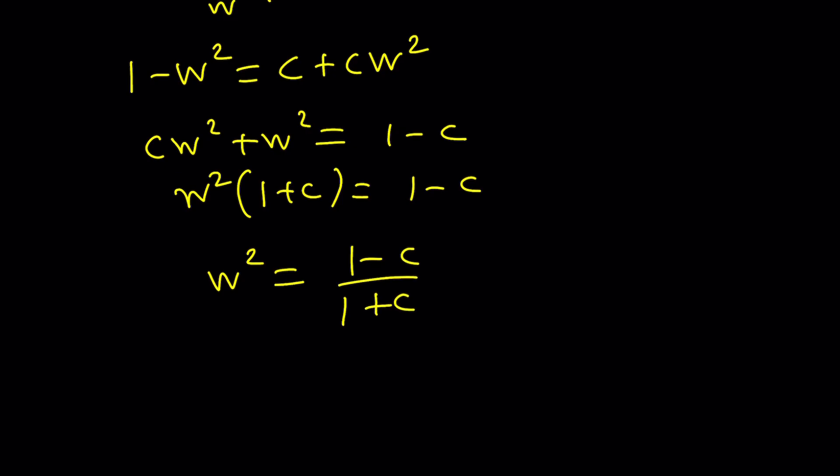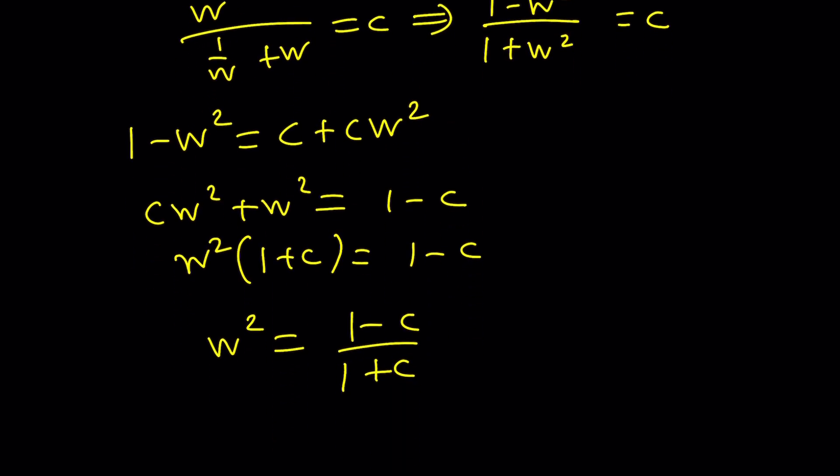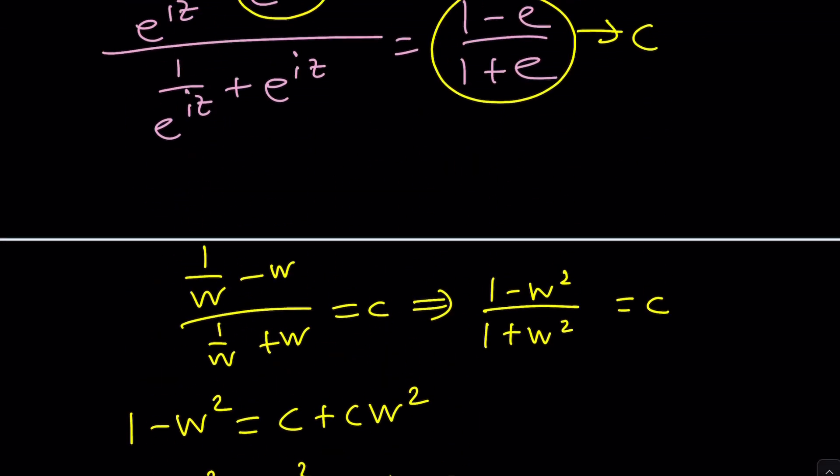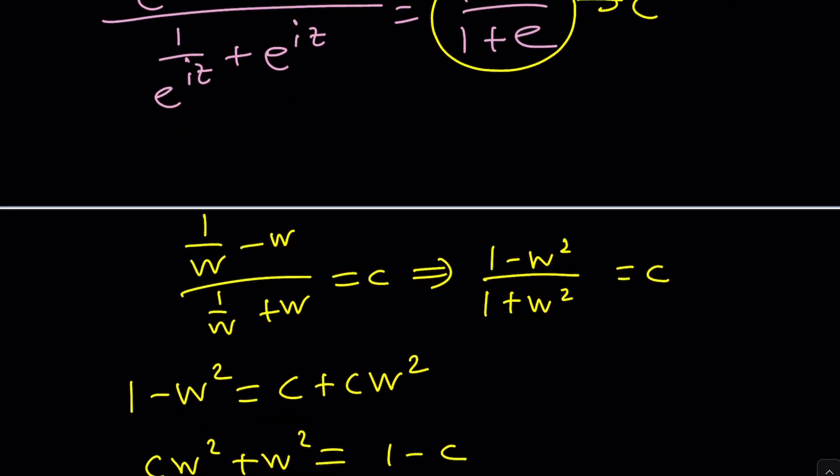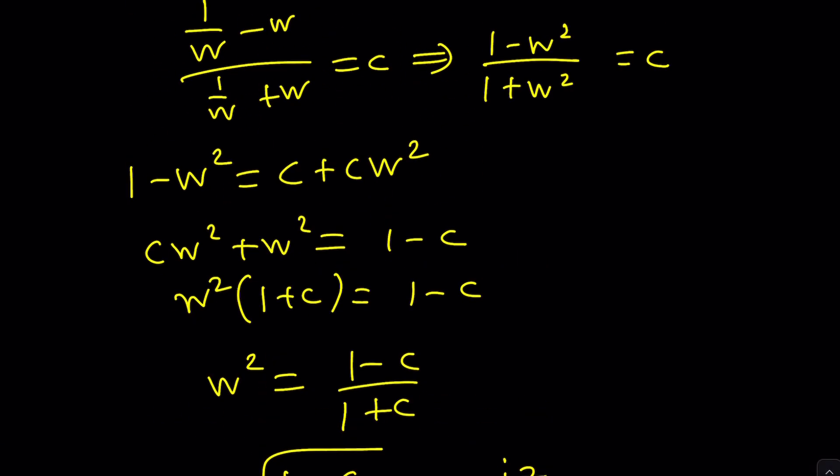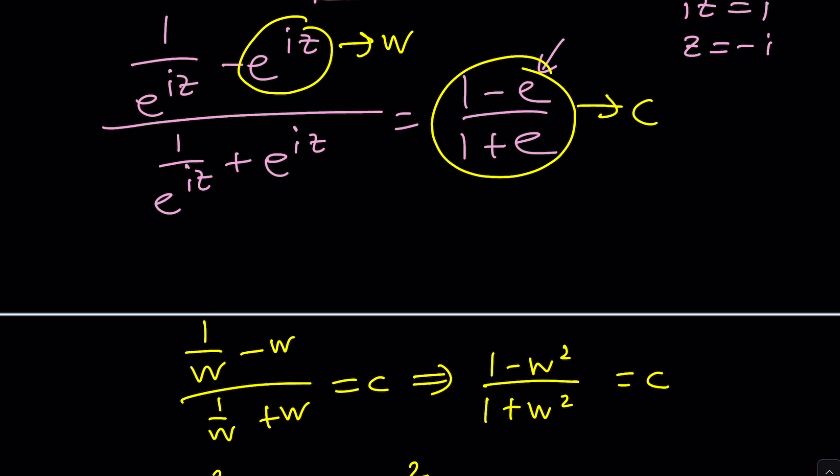We're going to get 1 over w minus w divided by 1 over w plus w equals c. And we can go ahead and multiply the top and the bottom by w. That's going to give me 1 minus w squared divided by 1 plus w squared equals c. And now we can go ahead and cross multiply c plus c w squared. Put the w's together and the constants together. Factor out w squared. You're going to get 1 plus c and then 1 minus c. And finally, you're going to get w squared.